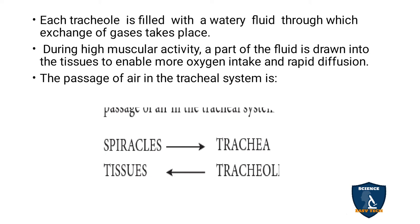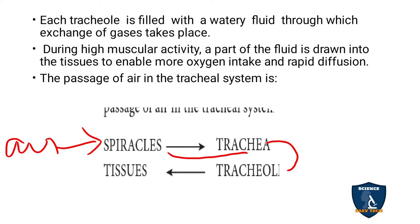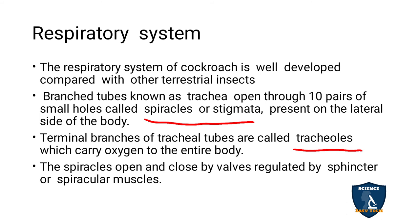The passage of air in the tracheole system is as follows: air enters through spiracles, then goes into the trachea, from the trachea it goes to the tracheoles, and then to the tissue. This is how the transportation of gases and exchange — that is respiration — takes place.